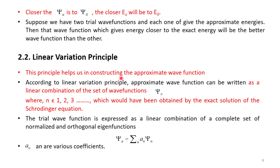The linear variation principle helps us in constructing the approximate wave function. According to this principle, the approximate wave function can be written as a linear combination of a set of wave functions ψₙ. The trial wave function is expressed as a linear combination of a complete set of normalized and orthogonal eigenfunctions. The trial wave function ψₐ can be constructed as ψₐ = Σ aₙ ψₙ, where aₙ are various coefficients.